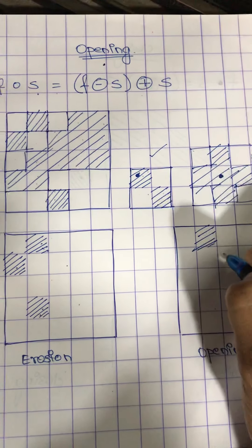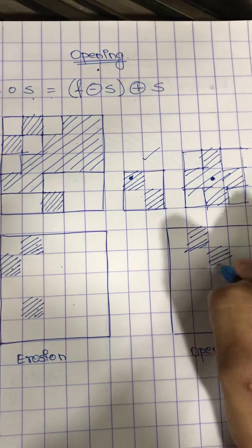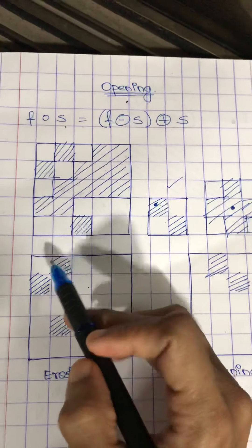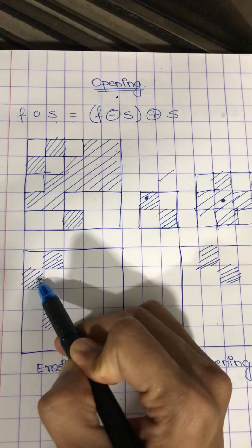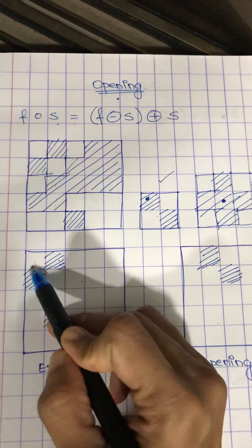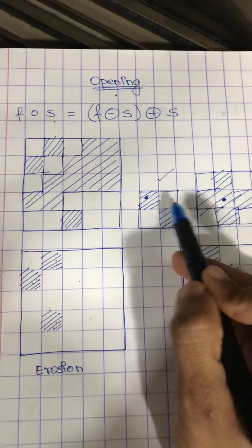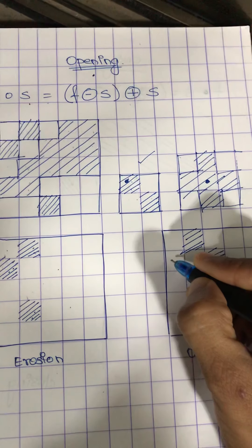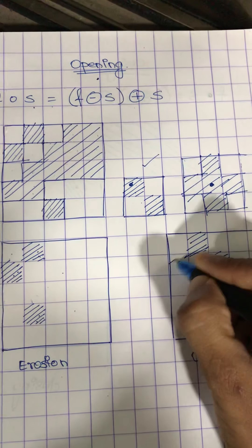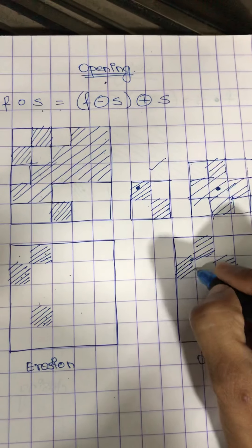Then again, at this part, on this pixel, if I place my structuring element here, it is going to intersect with that of the origin. So even here at this position, I will copy the structuring element.